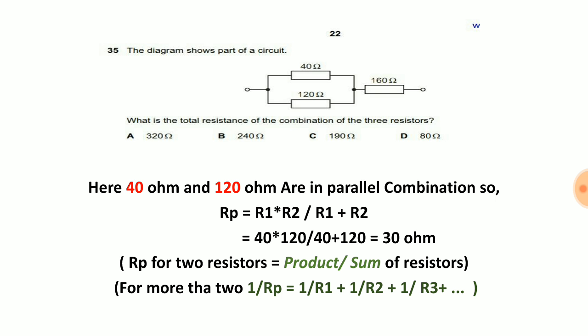On doing this we will get 30 ohm. 30 ohm is the result of 40 ohm and 120 ohm in parallel.